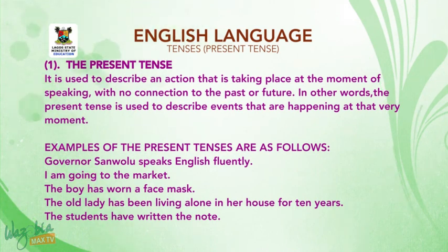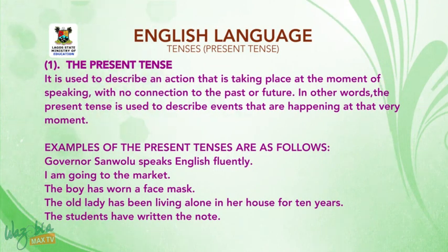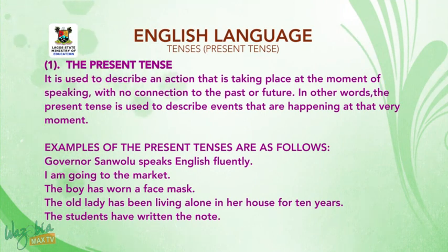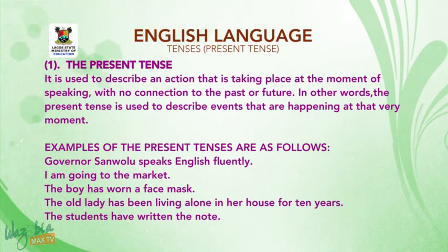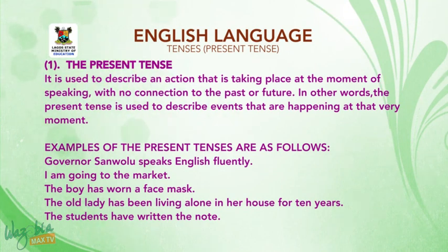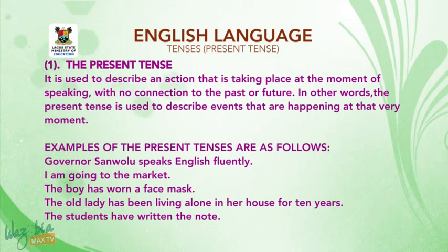Examples of present tense: 1. Governor Saul speaks English fluently. 2. I am going to the market. 3. The boy has worn a face mask. 4. The old lady has been living alone in her house for 10 years.